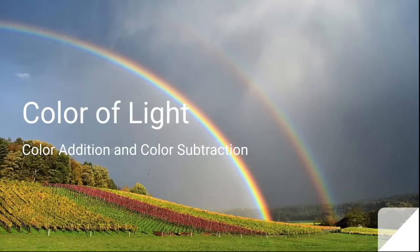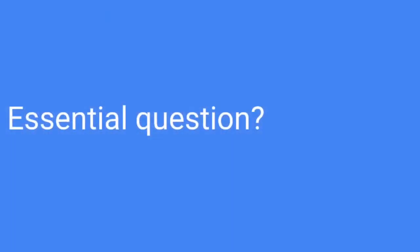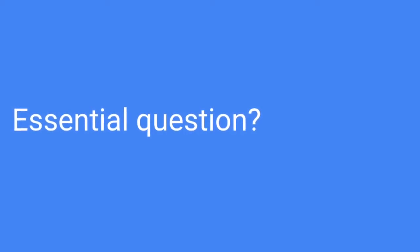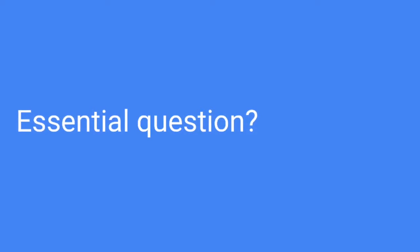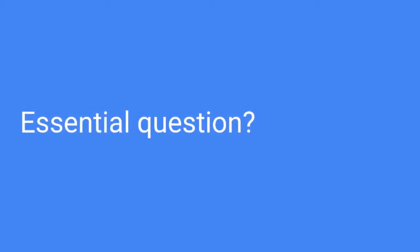Today I will be discussing the color of light, more specifically color addition and color subtraction. The essential question is: how do we see colored lights, and how do we see colored objects? Those will be shown in this video as I go through color addition and color subtraction.